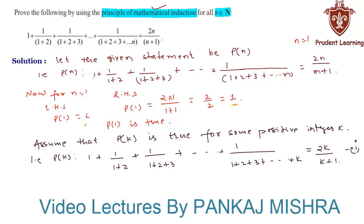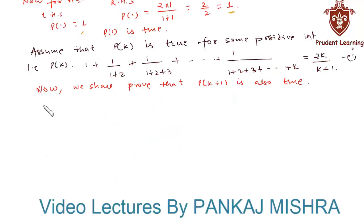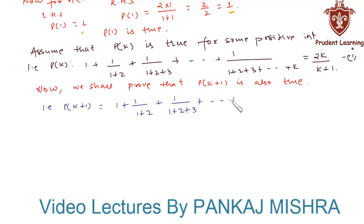Our last step is to prove that P(k plus 1) is also true. We have P(k plus 1) equals 1 plus 1 upon (1 plus 2) plus 1 upon (1 plus 2 plus 3) and so on, up to 1 upon (1 plus 2 plus 3 up to k plus 1).